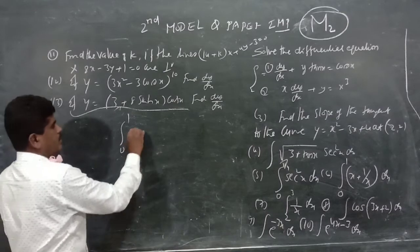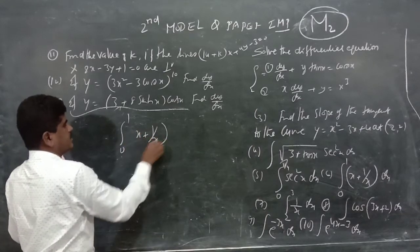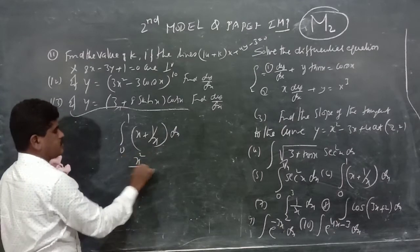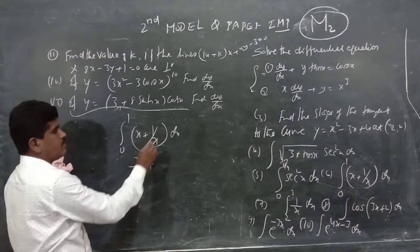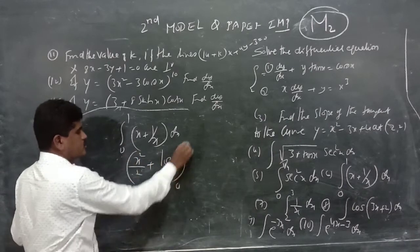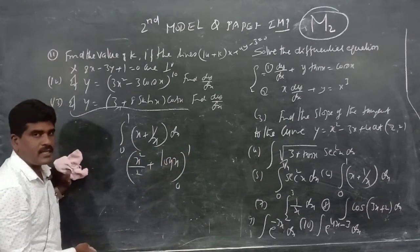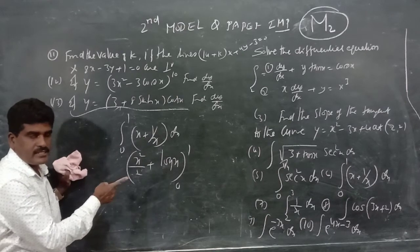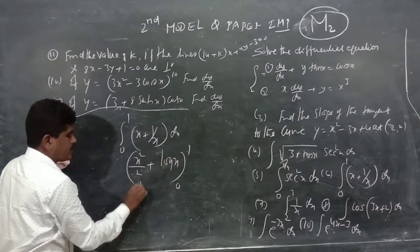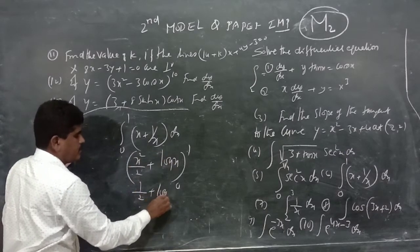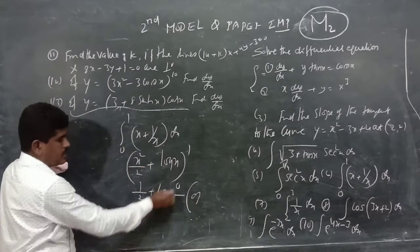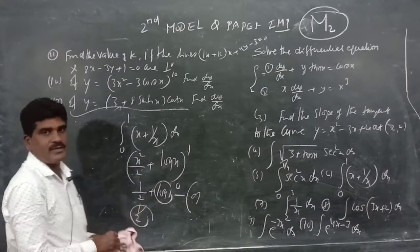Sixth problem: evaluate the integral of (x plus 1/x) dx from 0 to 1. The integration gives x²/2 plus log x, evaluated from 0 to 1. Applying the limits: (1²/2 plus log 1) minus (0) equals 1/2 plus 0 equals 1/2. The answer is 1/2.